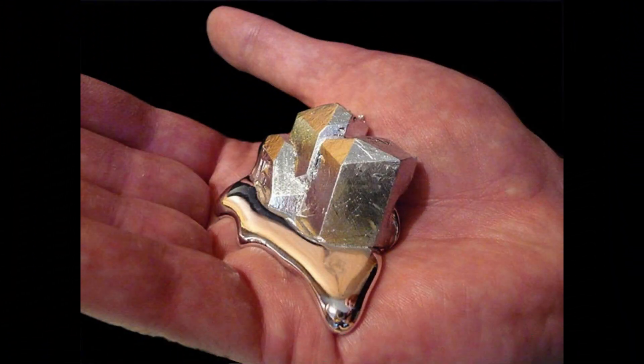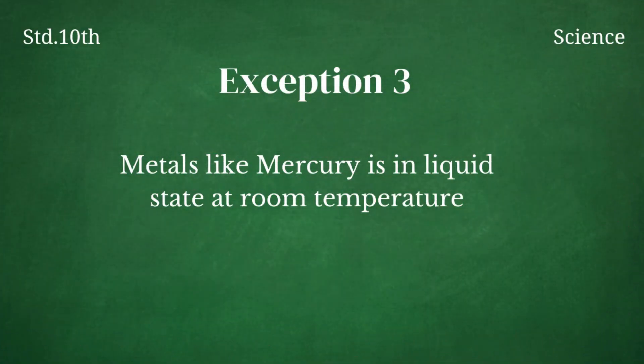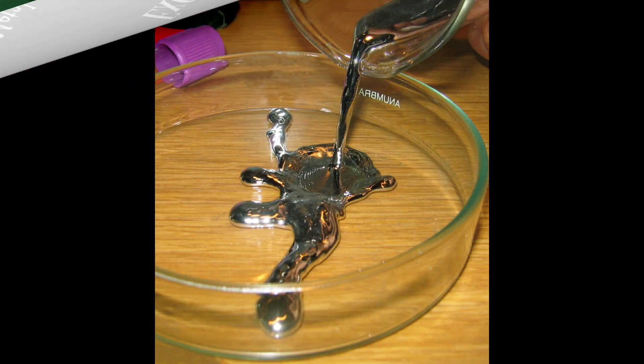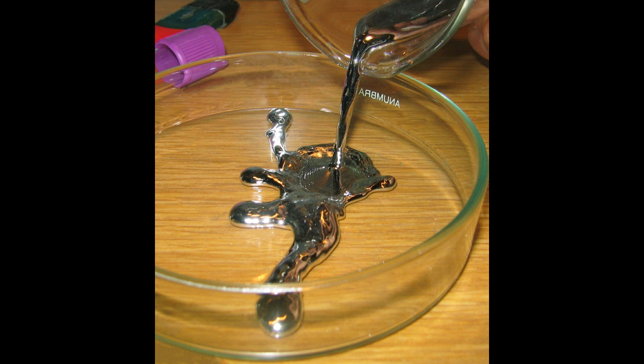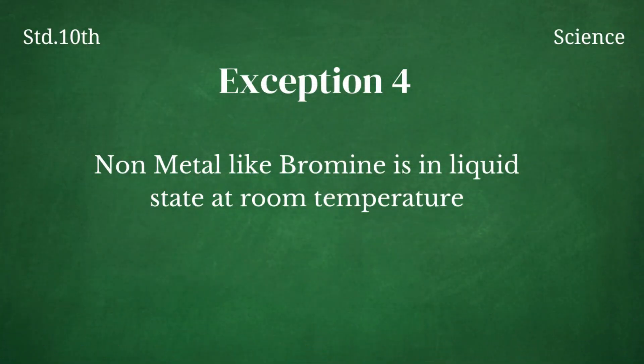Metals are solid at room temperature, but mercury is the metal which is in liquid state at room temperature. Most of the non-metals are either solid or in gaseous state, but bromine is the only non-metal which is in liquid state.